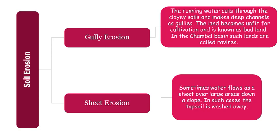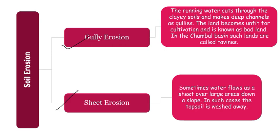Soil erosion on a large scale is of two types: gully erosion and sheet erosion. In gully erosion, running water cuts through clay soil and makes deep channels called gullies. We cannot cultivate this land. In the Chambal River basin, these are known as badlands or ravines. In sheet erosion, water flows as a sheet over large areas, and more and more of the topsoil sheet is washed away.